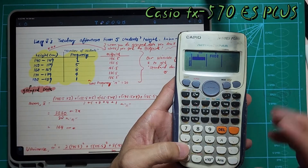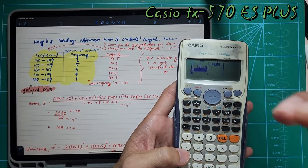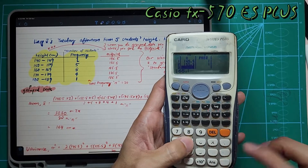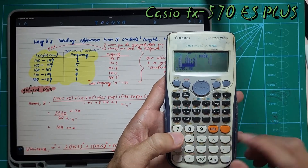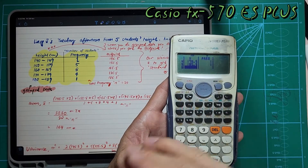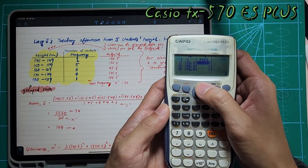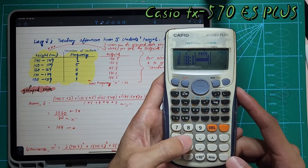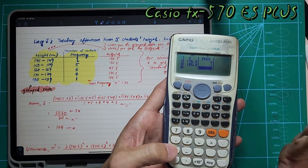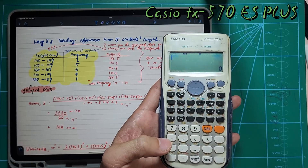Now insert your midpoints one by one: 145.5 equal, 155.5 equal, 165.5 equal, 175.5 equal, 185.5 equal — you have five classes total. Then go back up to the frequency column beside 145.5 and insert the frequencies: 2, 5, 8, 4, 1 — pressing equal each time to move to the next one. Once done, press AC. Everything is safely stored inside the calculator.